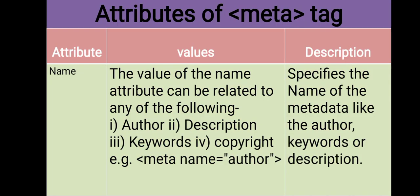Let us discuss the various attributes of the meta tag. The first attribute of the meta tag is name, and the value of the name attribute can be related to any of the following: author, description, keywords, copyright, etc.